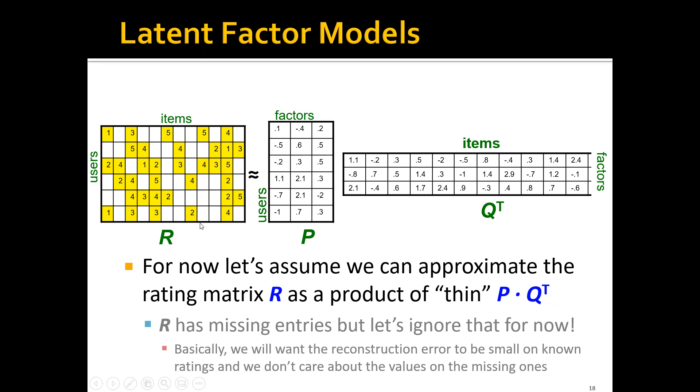Note that this R actually has missing entries. Basically, we would want to minimize the reconstruction error, but only on the known ratings. We don't actually care about the values on the missing ones like the ones in the white boxes here. But let's just ignore that for now.